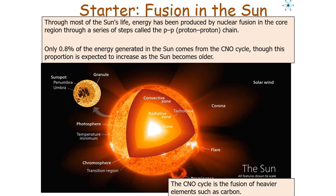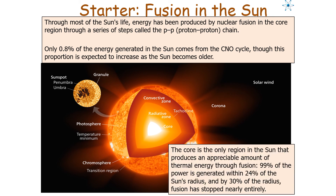Throughout most of the sun's life cycle, energy is produced by nuclear fusion in the core through the proton-proton chain. Only about 0.8% of the sun's energy generation comes from the CNO cycle, which is the fusion of heavier elements such as carbon, nitrogen and oxygen — though this proportion increases as the sun becomes older. The core is the only region that produces an appreciable amount of thermal energy through fusion, because you need the high temperature and high pressure found there. About 99% of the sun's power is generated within about 24% of the sun's radius, and by about 30% of the sun's radius fusion stops nearly entirely.